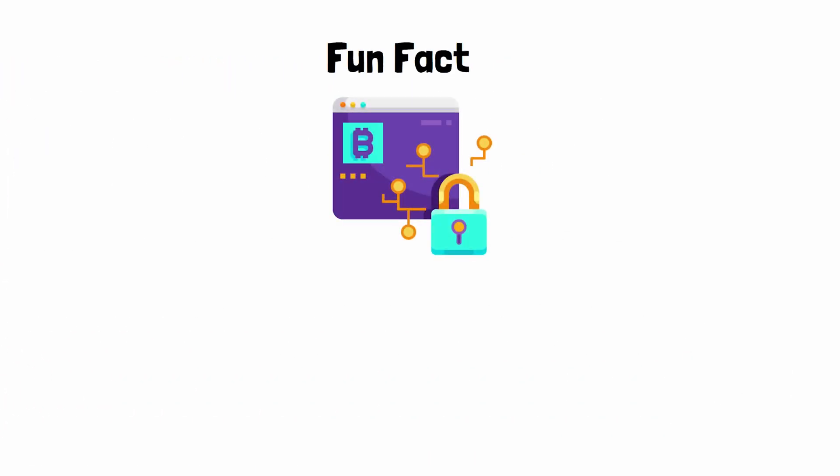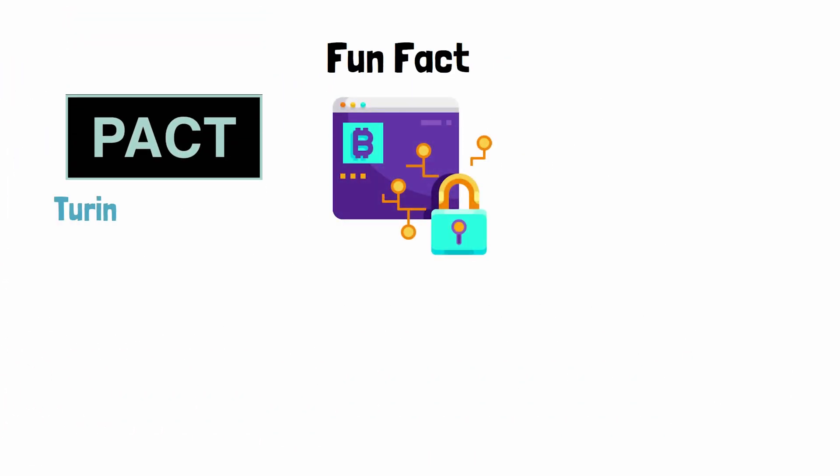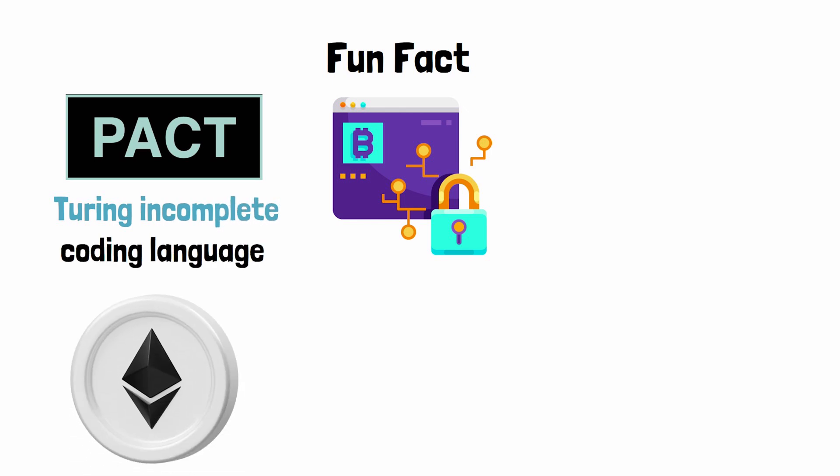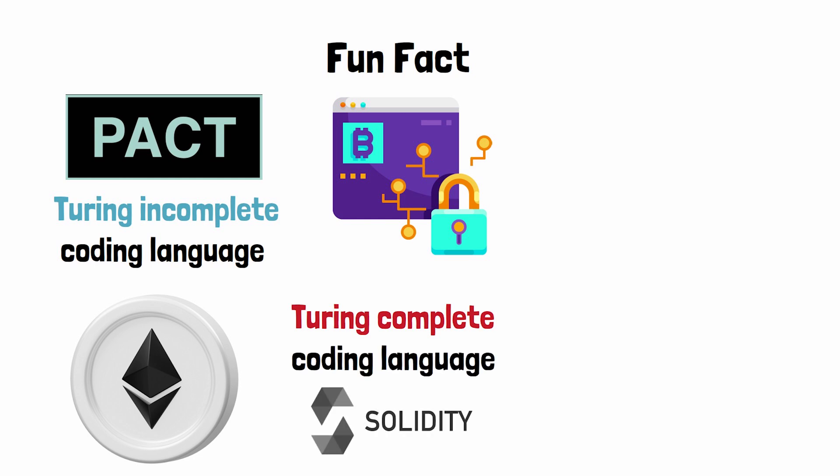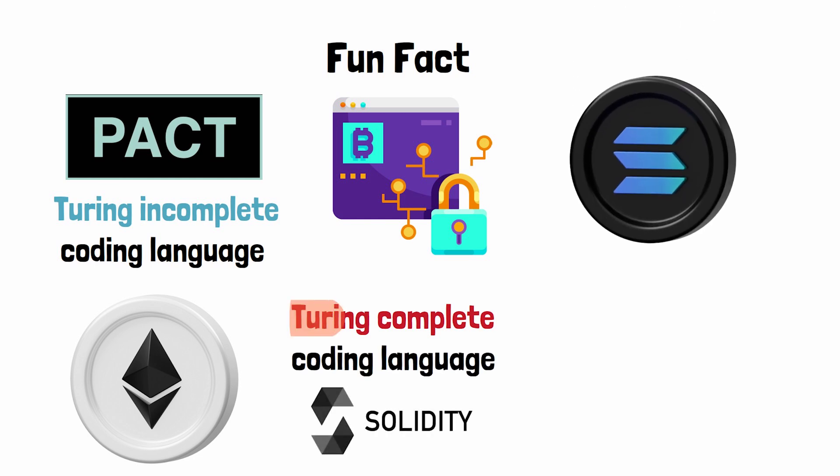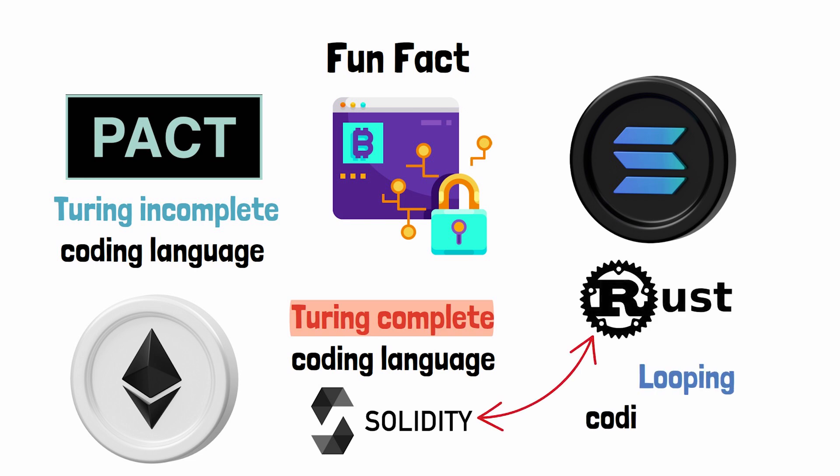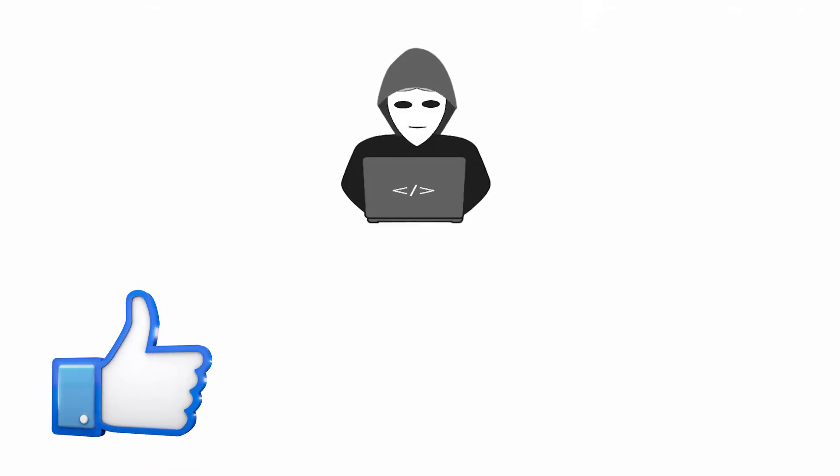So another fun fact: just like Bitcoin's coding language, Pact is a Turing incomplete coding language. On the other hand, we have blockchains like Ethereum that use a Turing complete coding language like Solidity. Blockchains like Solana also use a Turing complete coding language called Rust. Both of which are looping coding languages. This means that they can never use formal verification, even if they wanted to.